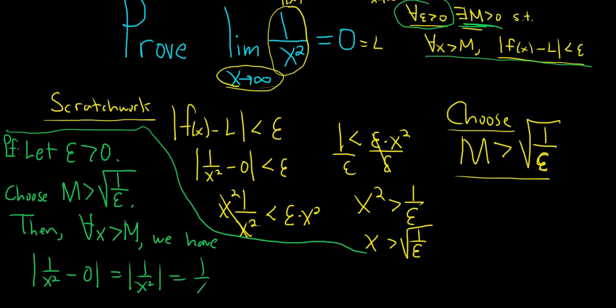That's equal to 1 over x squared. And so now we're going to carefully - and this is really beautiful - we're going to work backwards. Watch this. So note, we said for all x greater than M, so x is greater than M. But we know something about M. It's greater than the square root of 1 over epsilon.